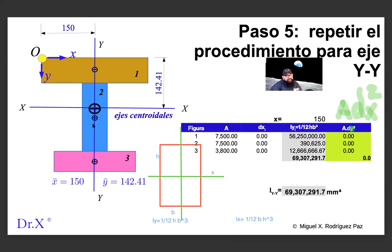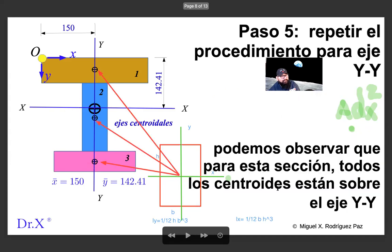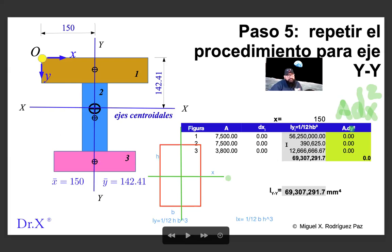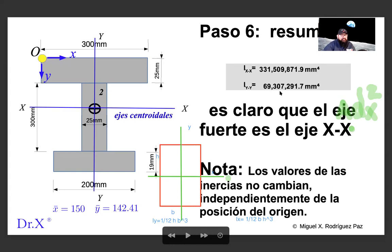Since all A·dx² terms are zero, the total I_y is just the sum of the individual centroidal inertias of each rectangle — giving 69 million mm⁴. Comparing: I_x = 331 million mm⁴ versus I_y = 69 million mm⁴. Now you can see with numbers which is the strong axis: it is the x-axis.